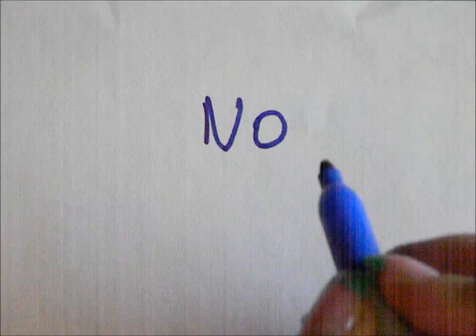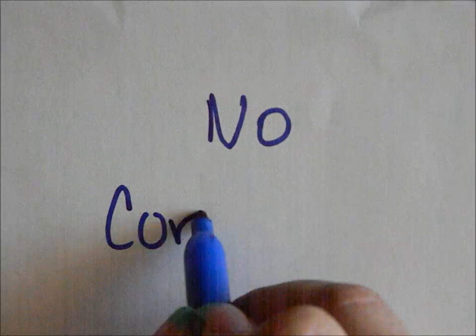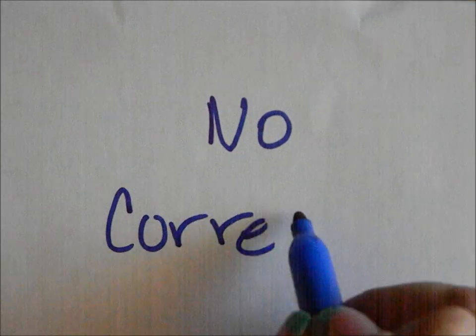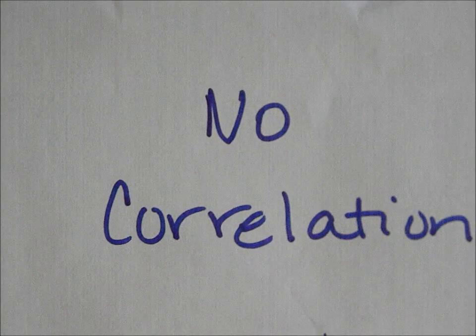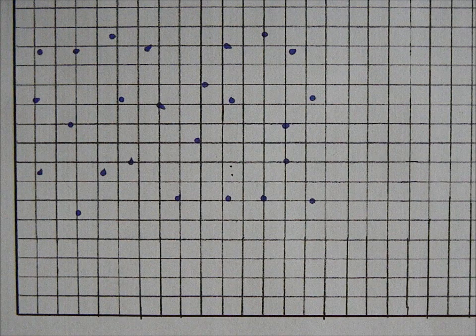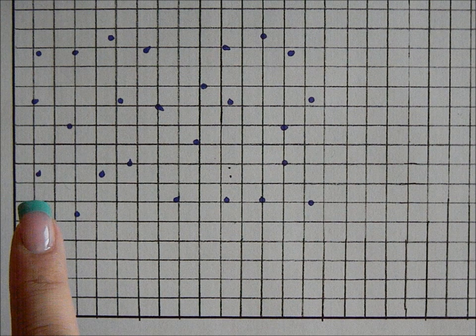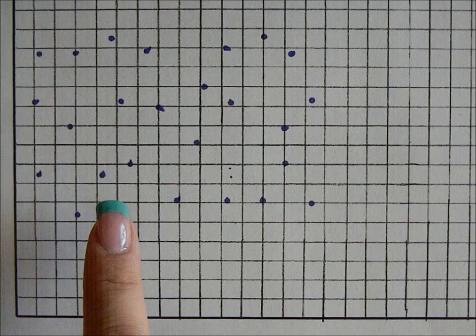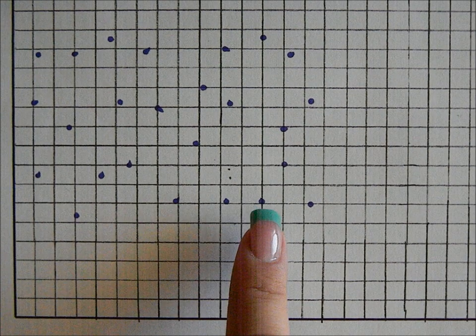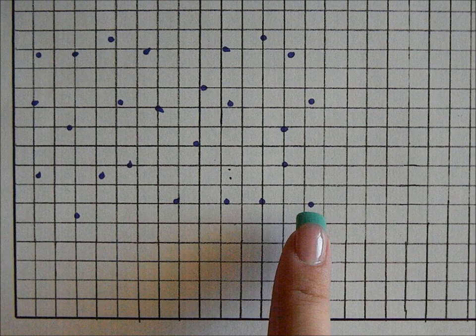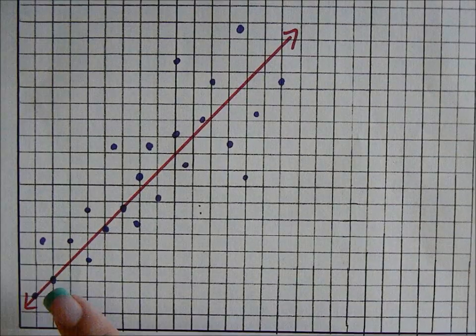There is no correlation when the points do not have an increasing or decreasing pattern. In the picture, it just looks like a blob or a rectangular cloud, so this would have no correlation.